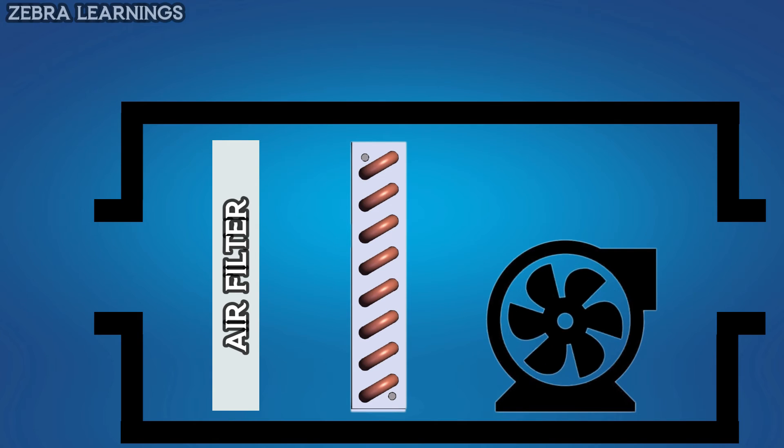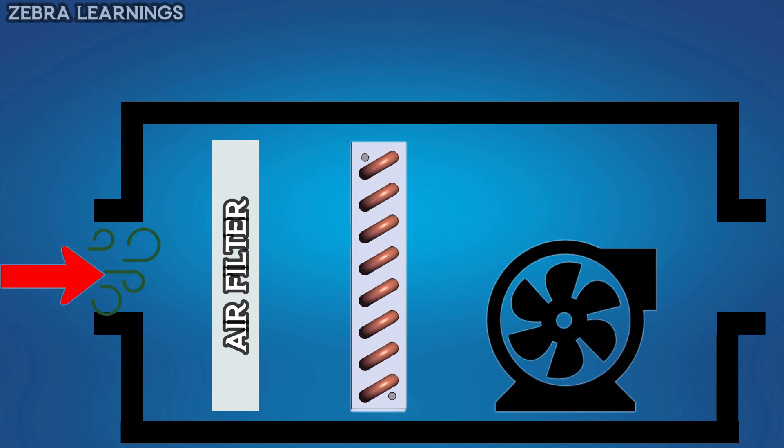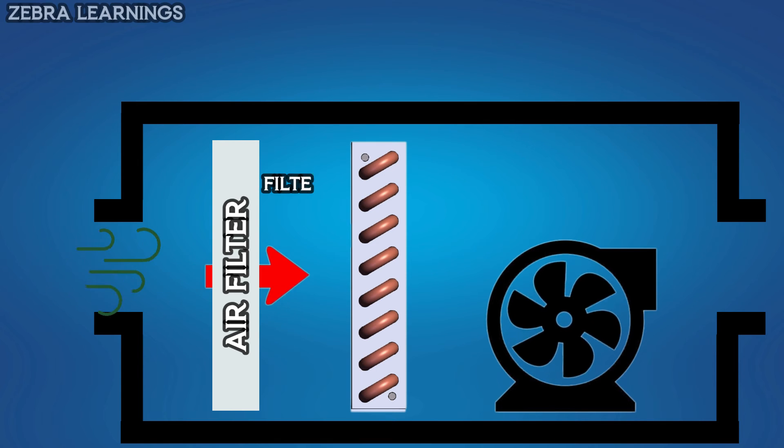When the blower fan motor rotates, the air enters the FCU through the filter. When the air comes inside the FCU, the filter will filter the dust in the air.